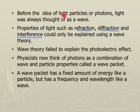Before the idea of light particles or photons, light was always thought of as a wave. Properties of light such as refraction, diffraction, interference could only be explained using a wave theory. Wave theory, however, failed to explain the photoelectric effect. Physicists now think of photons as a combination of wave and particle properties, called a wave packet. A wave packet has a fixed amount of energy, like a particle, but has a frequency and a wavelength, like a wave.